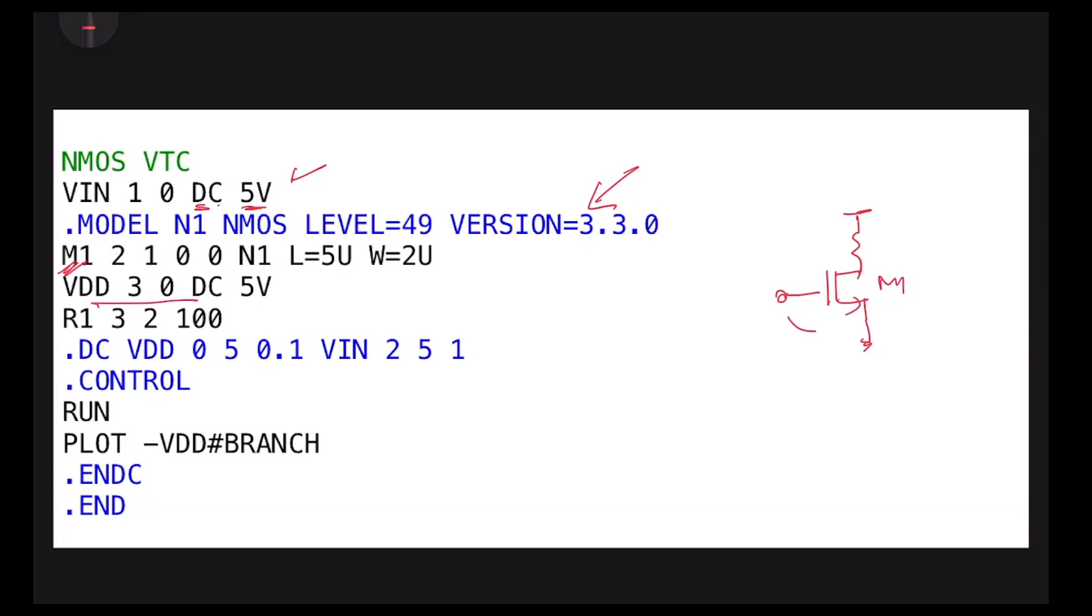Then VDD - a DC source connected between nodes 3 and 0, 5 volt. Then the resistance connected between nodes 3 and 2, and the value is this.